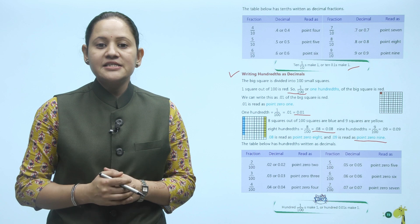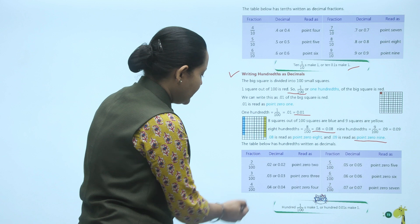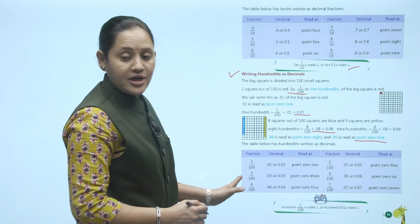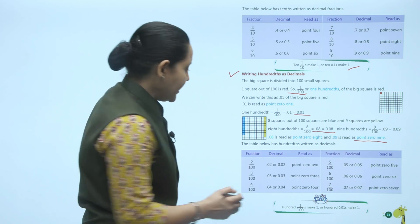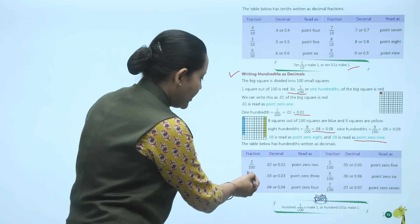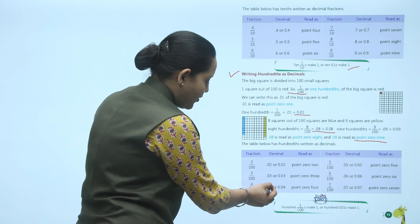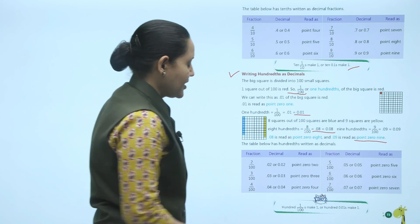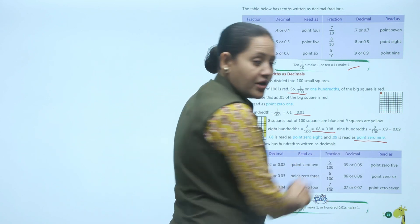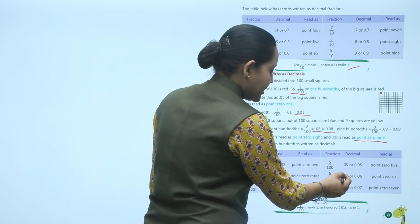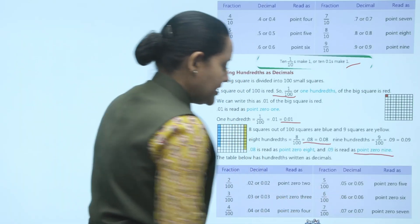The table below has hundredths written as decimals. The fractions given are 2 upon 100, 3 upon 100, and 4 upon 100. 2 upon 100 is written as 0.02, read as 'point zero two.' 3 upon 100 is 0.03, and 4 upon 100 is 0.04. Similarly, 5 upon 100 is 0.05, 6 upon 100 is 0.06, and 7 upon 100 is 0.07.